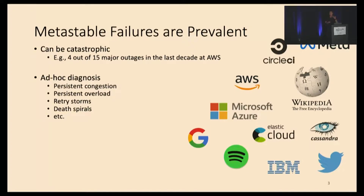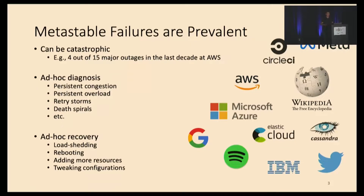Currently, system practitioners study them under different names, such as persistent congestion, persistent overload, retry storms, and death spirals. The recovery solutions proposed are also in ad-hoc fashion, such as load shedding, rebooting, adding more resources, and tweaking configurations.